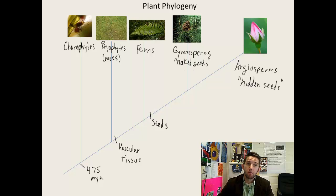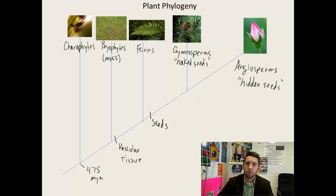Either the seeds are exposed or we're hiding them within some kind of fruiting or flowering body, such as the angiosperm. We can see the progression from algae up to a very complex flowering organism which seeks out insects and other pollinators to spread the pollen. We'll keep going onward through our taxonomy unit.